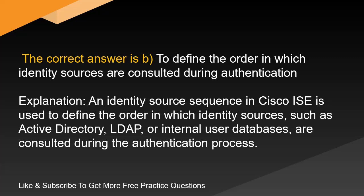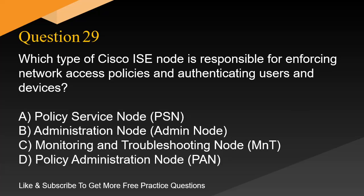Explanation. An identity source sequence in Cisco ISE is used to define the order in which identity sources, such as Active Directory, LDAP, or internal user databases, are consulted during the authentication process.